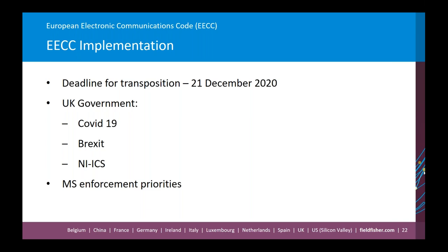The same watch-and-see approach applies for other member states — we just don't know exactly how they will view enforcement priorities in this area. It's incredibly complex. It seems unlikely that regulators will immediately jump to take action against companies for non-compliance in this particular area, particularly those falling into the number-independent category. The big players will always be the ones regulators go for first, but it seems unlikely to be a regulatory priority from the outset — though certainly one to watch.